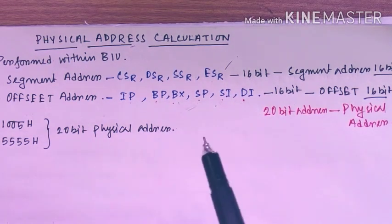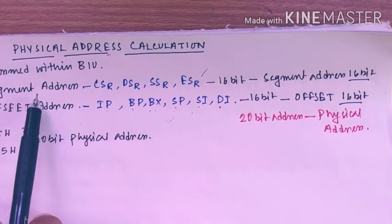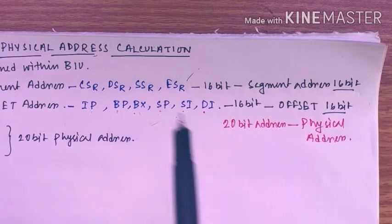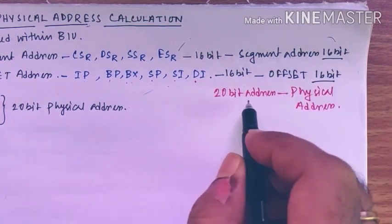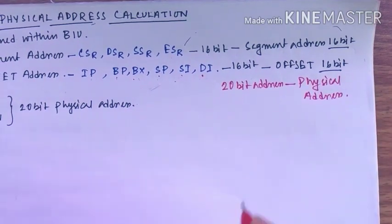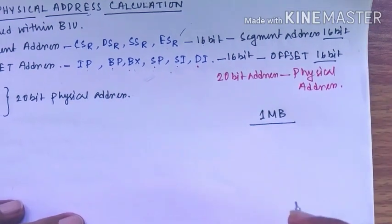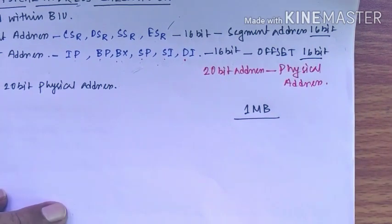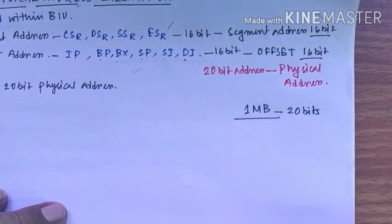To calculate the physical address we need the combination of one segment address and one offset address. As we know, all the registers of the 8086 are 16-bit registers, so their content — that is, the segment address — should be 16 bits, and similarly the offset address should also be 16 bits. The physical address means we want to understand how by using these two 16-bit addresses a single 20-bit address can be calculated internally. To give a unique address to each memory location within the 1 MB memory space, we need 20 bits of address.